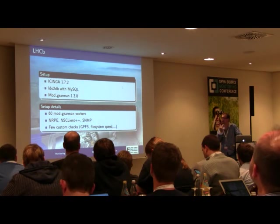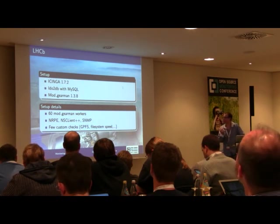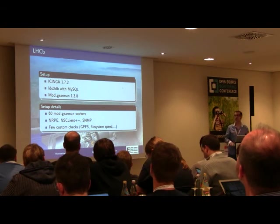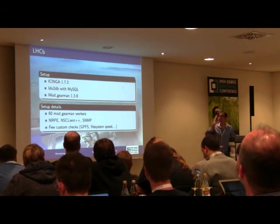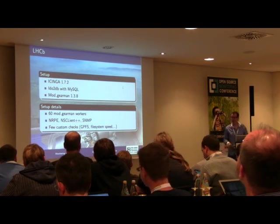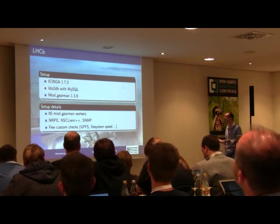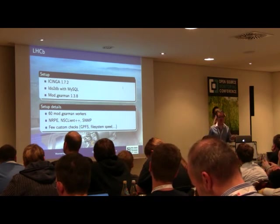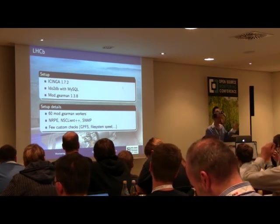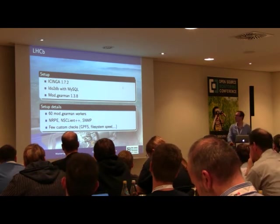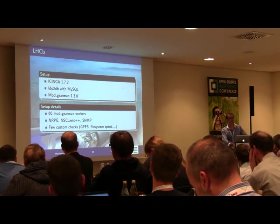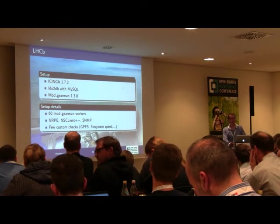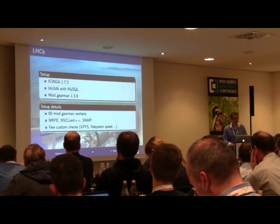To execute checks on Linux we use NRPE, NSClient++ for Windows — which is very convenient because it offers the same interface as NRPE — and a few SNMP checks for switches and disk pools. For the checks themselves, we use almost only standard tools. We had to write very few custom checks, really only for very particular purposes. It's almost a system out of the box with only very few configuration tricks.